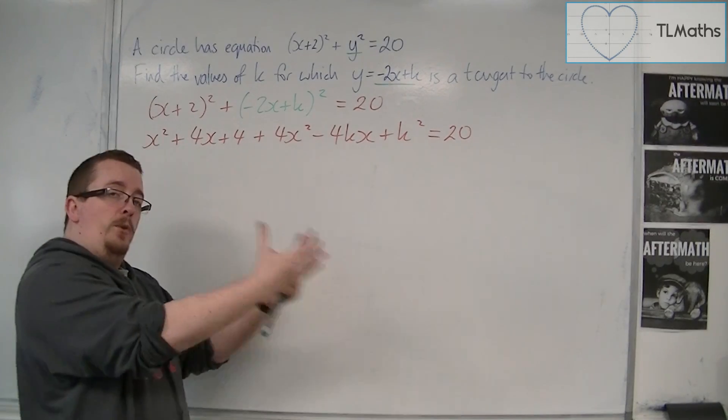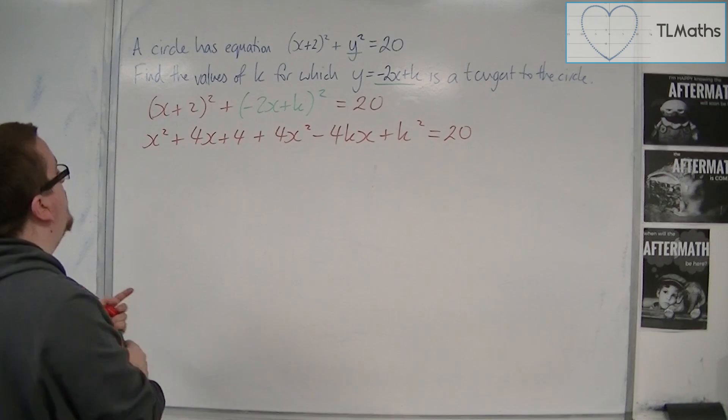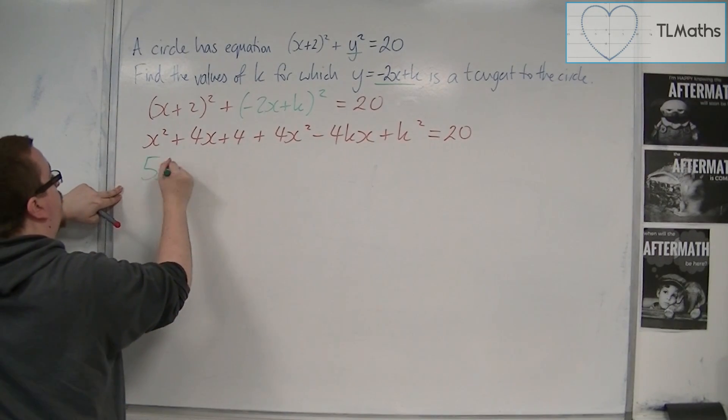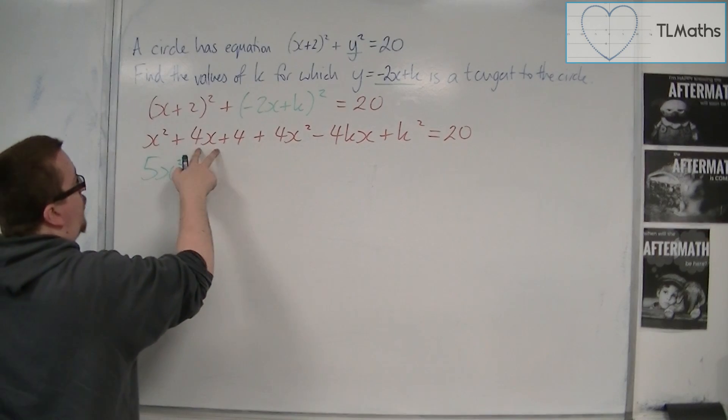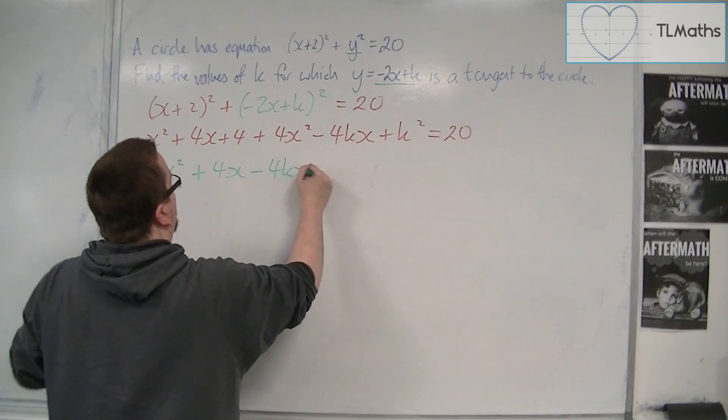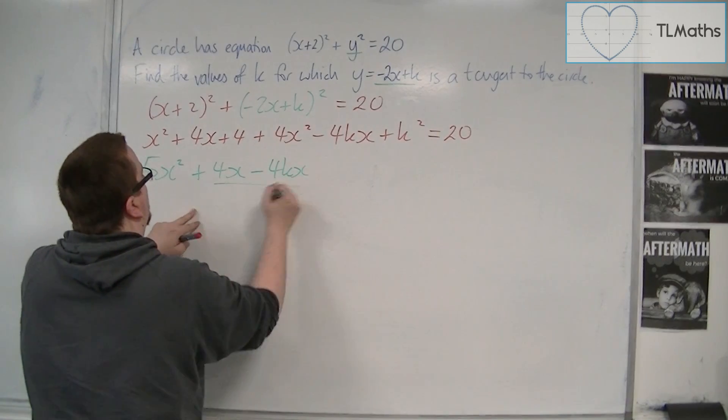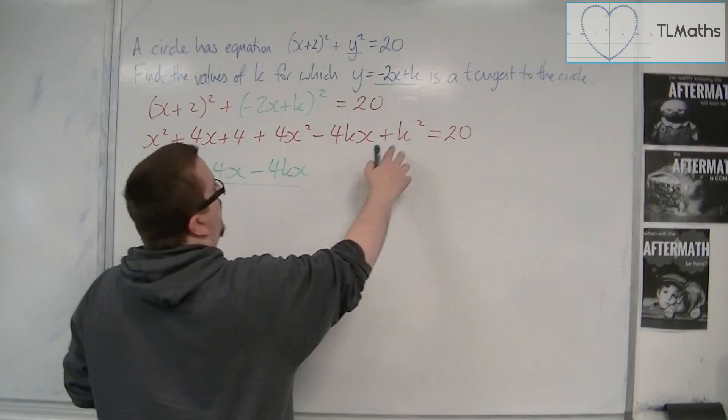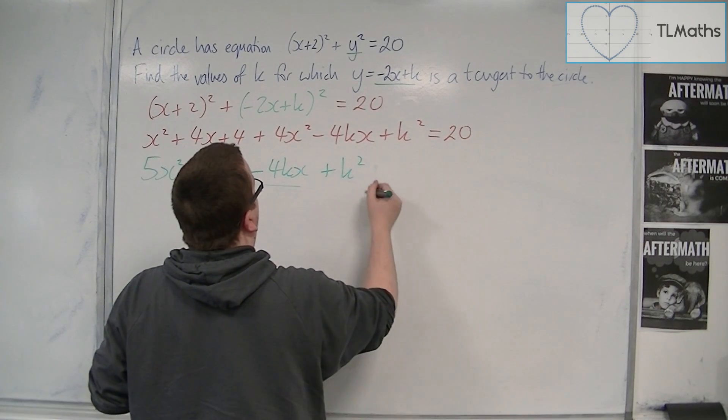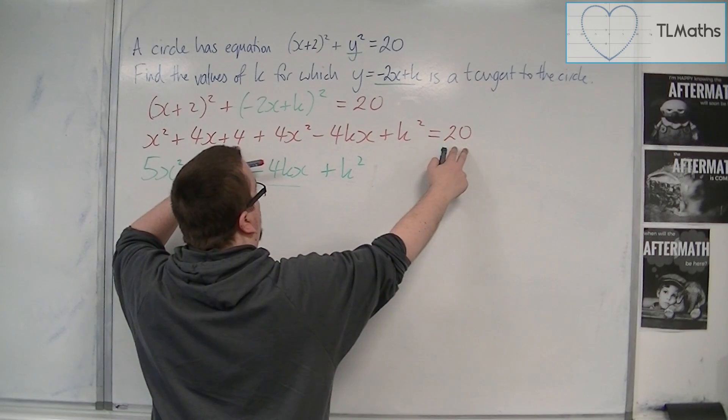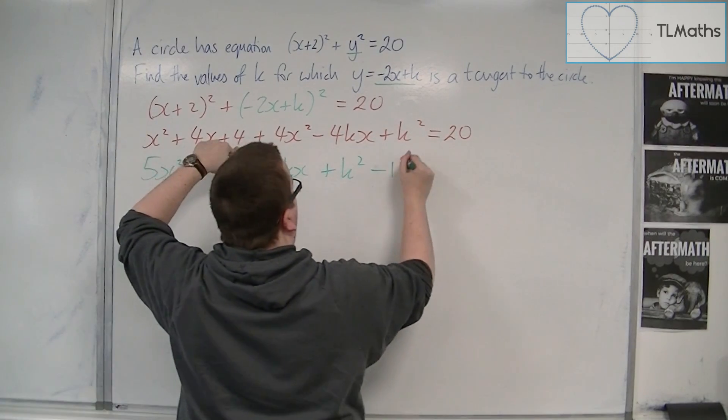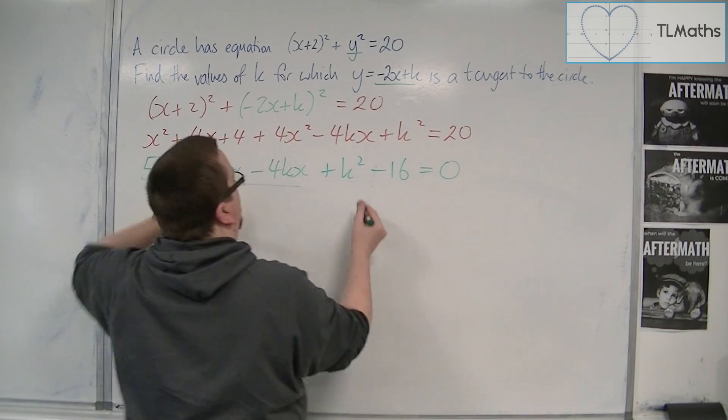So we want to bring this all over to the left-hand side and simplify it. We've got this x² and 4x², so that makes 5x². We have 4x and we have the -4kx, so I'm going to group them together. And we've got this +4, the k² and the 20. So I'm going to put the k² first, and then the 4, take away 20, because I'm going to bring the 20 over to the left-hand side, brings me -16, which is equal to 0.